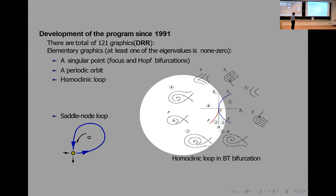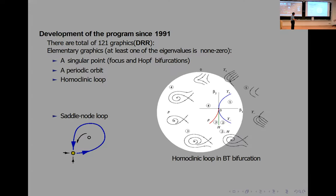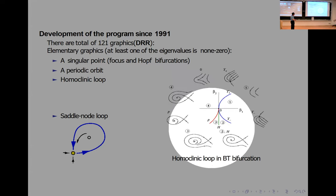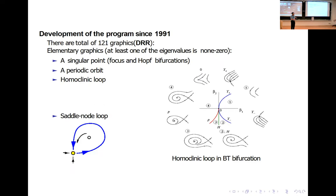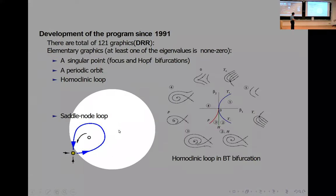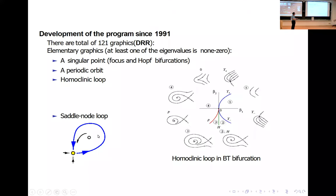Examples of elementary graphics include the homoclinic loop, which is involved in a BT bifurcation, and the saddle-node loop. For all elementary graphics, in terms of quadratic systems, these problems are all solved. A singular point is elementary if it has at least one non-zero eigenvalue.